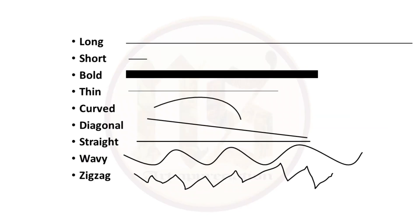Lines are of many types: long, short, bold, thin, curved, diagonal, straight, wavy, zigzag. When we look at a line, our mind forms an immediate idea. Long line has continuity. Short is to the point. Bold line is asking for attention. Thin line can get overlooked. Curved line has movement and grace. Diagonal line is asking for stability and balance. Straight line already has stability and balance. Wavy has continuity, movement and dynamism. And zigzag line looks crooked.